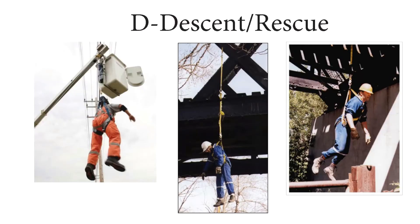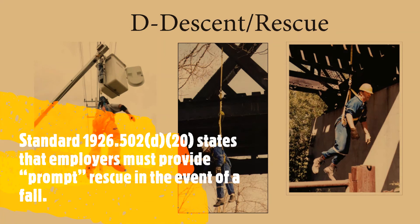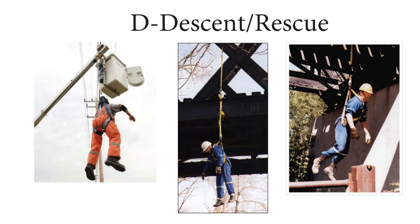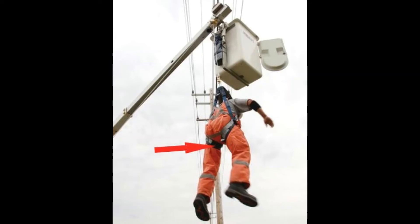The last thing to discuss is descent and rescue. OSHA states that employers must provide prompt rescue in the event of a fall. This is crucial because the longer a person is suspended, the higher the risk of suspension trauma — also known as harness-hang syndrome and orthostatic intolerance. This occurs after a worker has fallen into a fall arrest harness and is suspended in a hanging position until rescued. When hanging, the leg straps support the body's weight, but they also crush the femoral arteries on the inside of the legs, cutting off blood circulation.